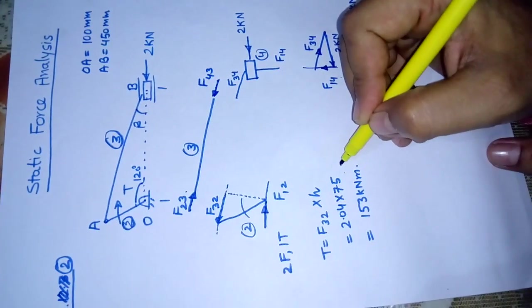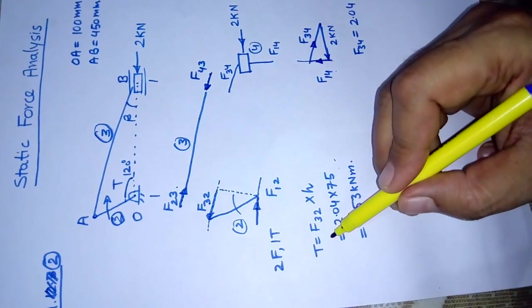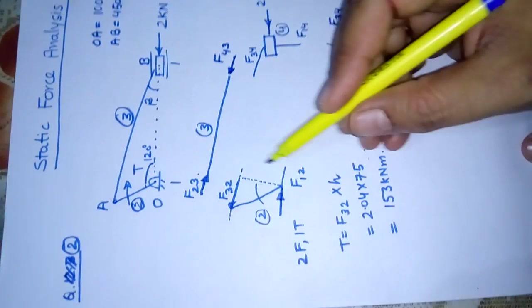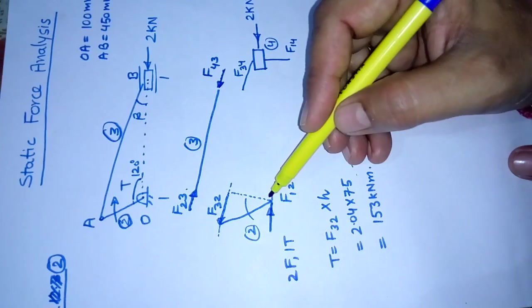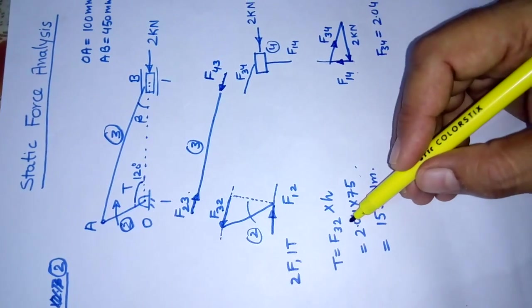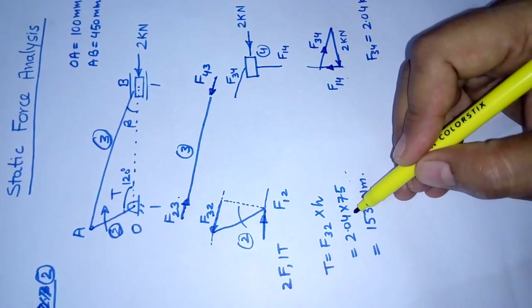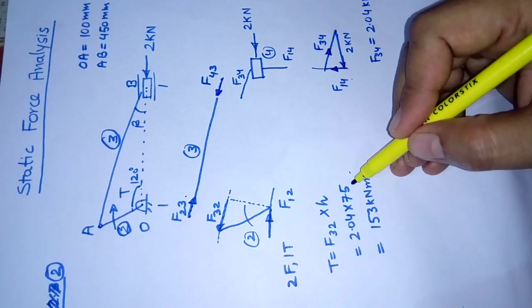So the value of torque can be determined now. Torque is force multiplied by perpendicular distance. The force we determined is 2.04 multiplied by 75, which gives us 153 kilonewton-millimeters.